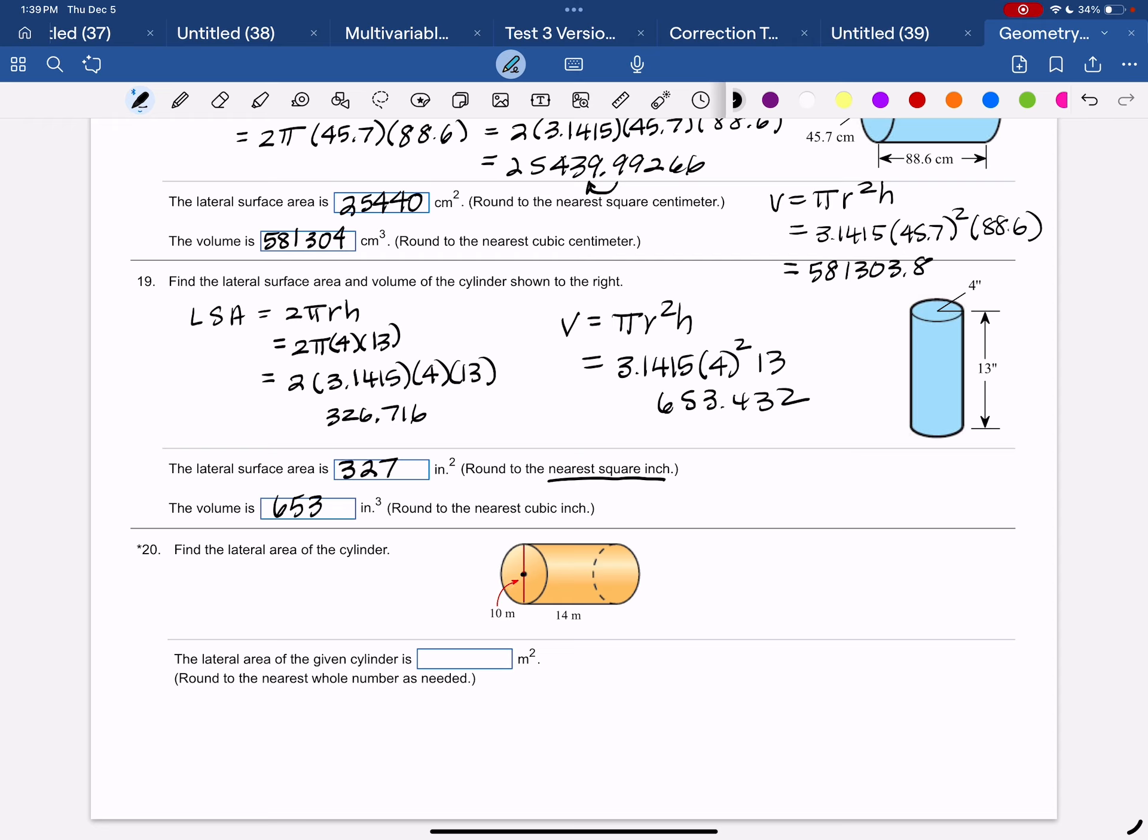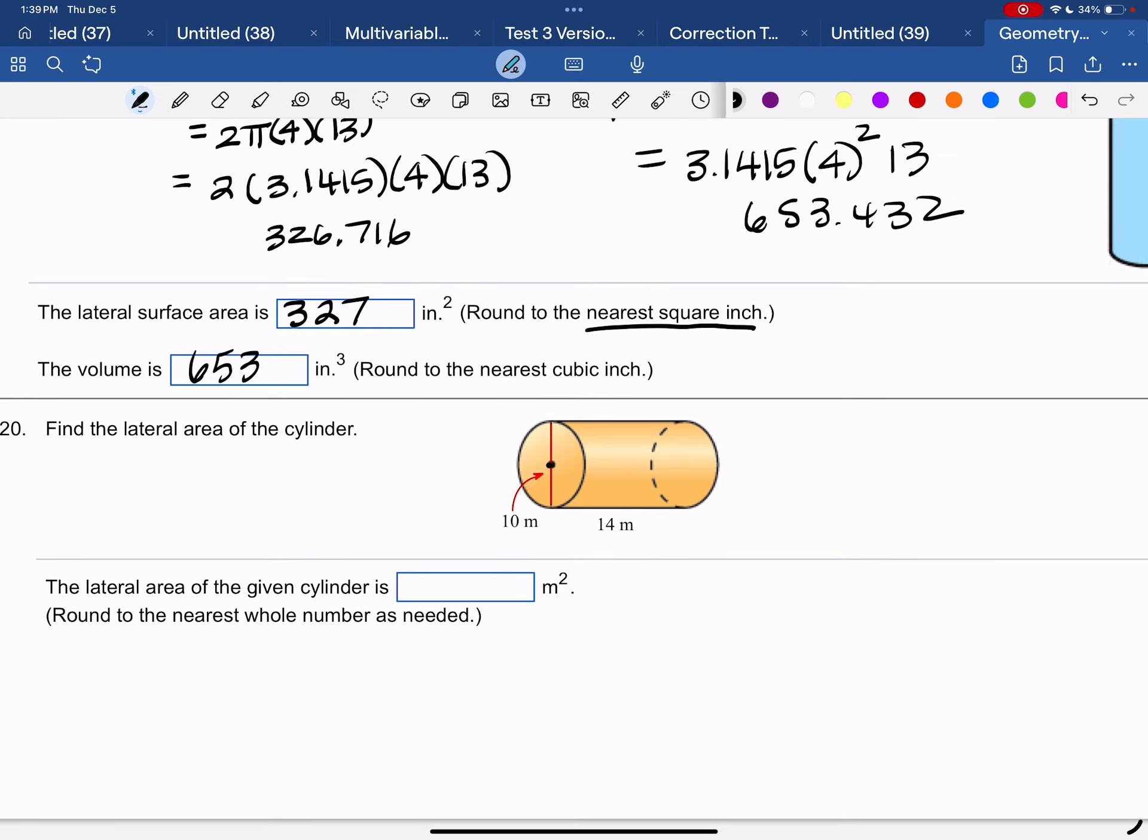And the last one, number 20, find the lateral area of the cylinder. So remember the lateral surface area of the cylinder is 2 pi RH. Notice they gave us the diameter is 10, so we have to use radius is 5.